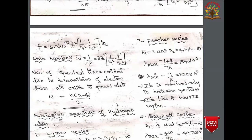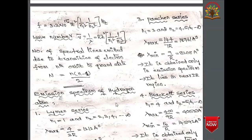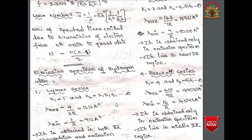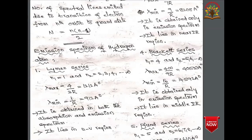The wave number ν̄ = 1/λ = RZ²(1/n₁² − 1/n₂²). This formula is also used for finding the recoil velocity of the atom: since λ = h/p, we get p = h/λ = RhZ²(1/n₁² − 1/n₂²), which gives the recoil momentum. When electron transition takes place from a higher orbit to the ground state, the number of spectral lines emitted is N(N−1)/2.